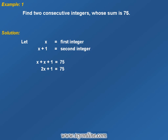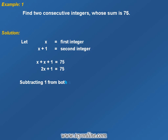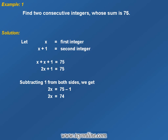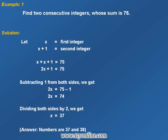Now subtract 1 from both sides. We get 2x is equal to 74. To find the value of x, we divide both sides by 2, and hence x comes out to be 37. As the second integer was x plus 1, its value would be 38.